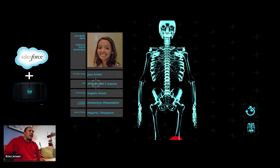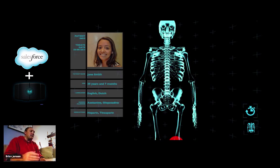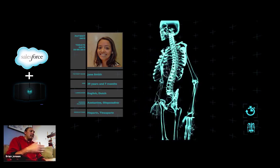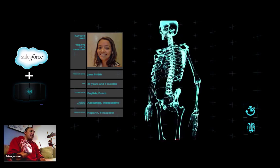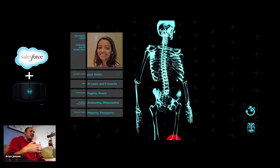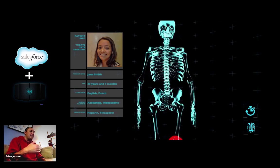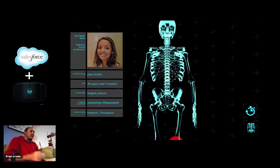This is her name, her age, all that kind of information. In the middle, I have a navigational system that is allowing me to rotate this skeleton around — I'm doing it with a simple hand gesture. And then also down here, I have a couple of action buttons that we'll get to in just a moment.